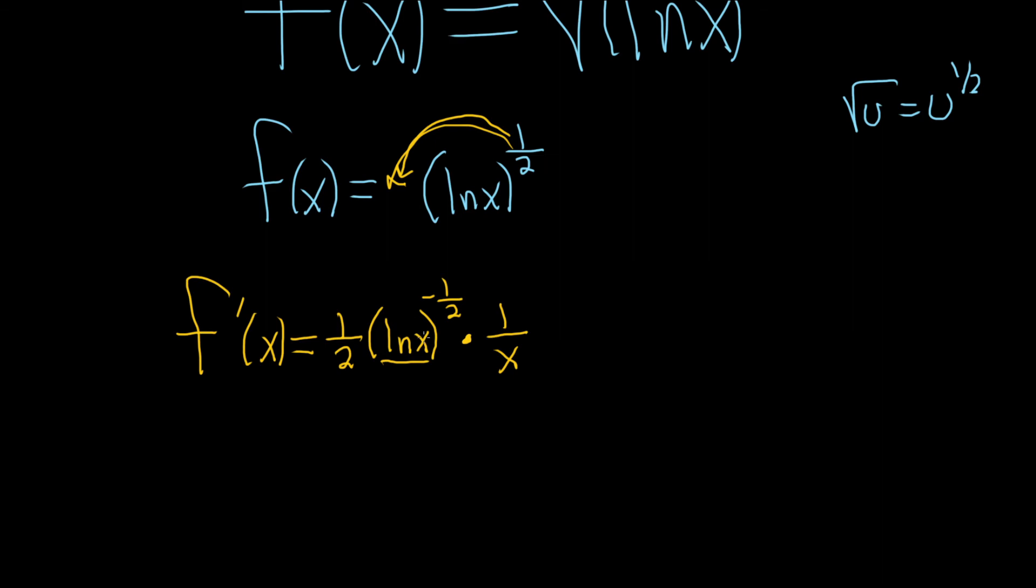Again, you take the derivative of the outside, leave the inside untouched, and then times the derivative of the inside. That's the chain rule.